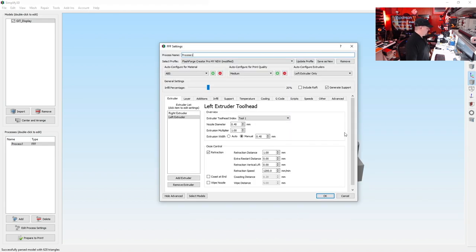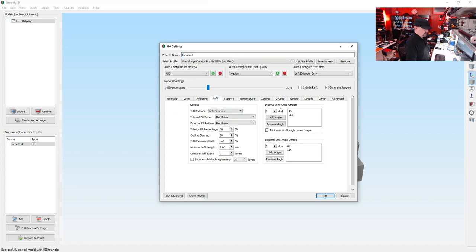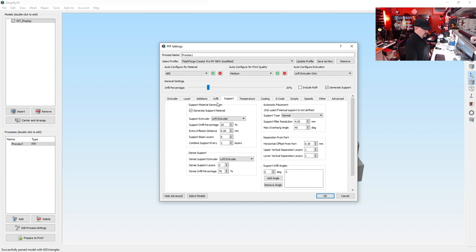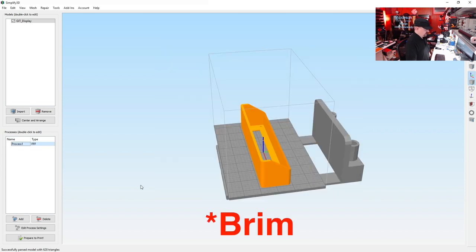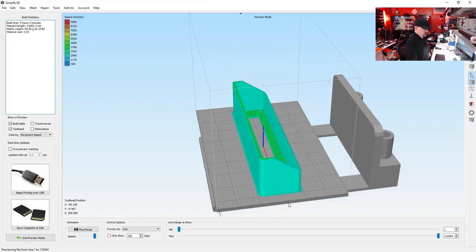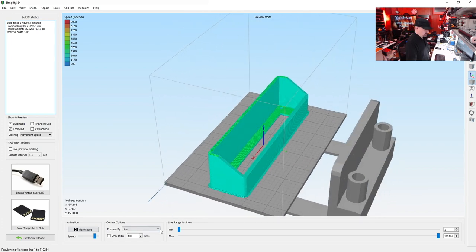So some of the settings I used, my infill was 20%. I didn't use any support. And the additions, I like to use a skirt just to keep it a little flatter on the bed and help prevent the corners from warping up. But once you've done that, it's a very simple print, and there it is ready to go.